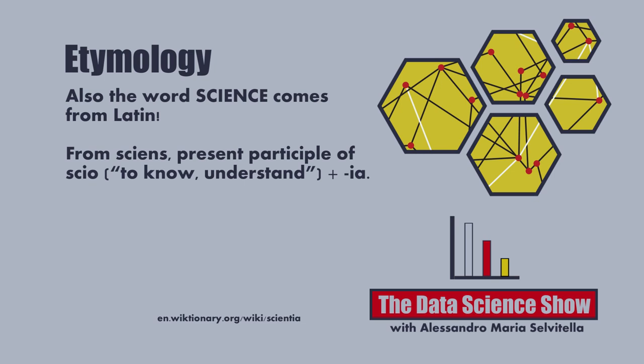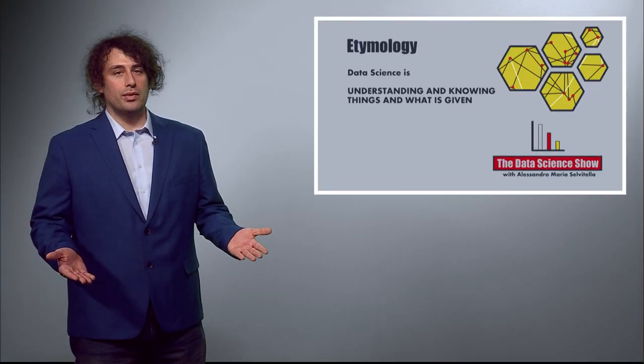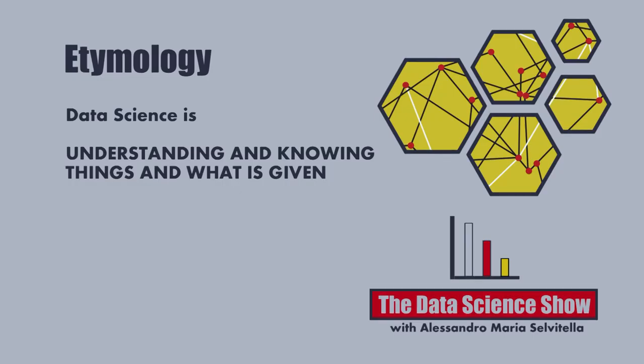Also the word science comes from Latin. It comes from sciens, present participle of scire, which means to know, understand, plus -ia. Please look at the wiki links for more information. If you follow the etymology, then data science means understanding and knowing things and what is given.